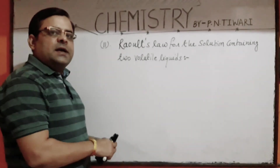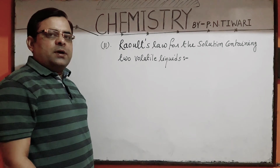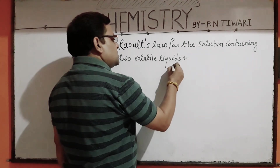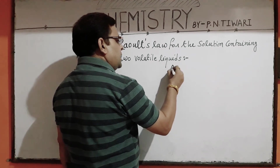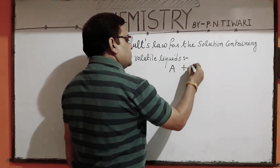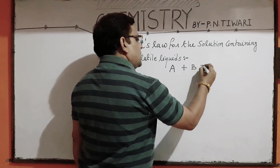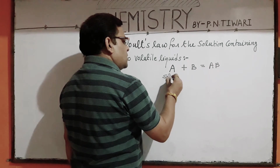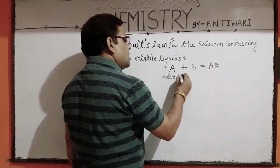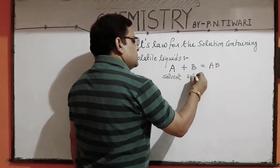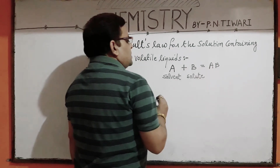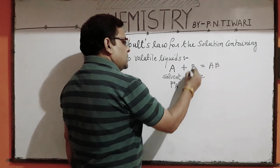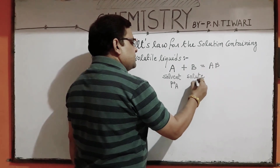All binary solutions are made by two components: solvent and solute. Suppose a binary solution is made by two components A and B, in which A is the solvent and B is the solute. In the pure state, the vapour pressure of the pure solvent is P0A and the vapour pressure of the pure solute is P0B.